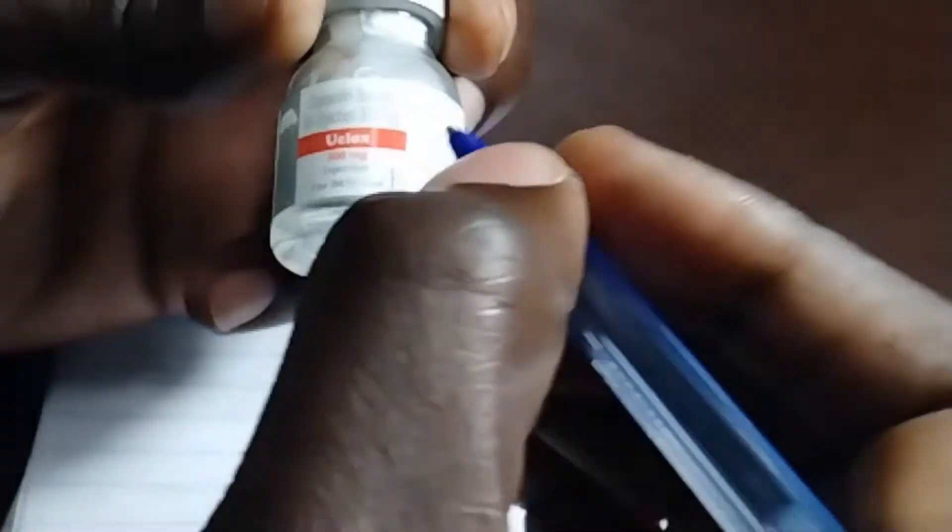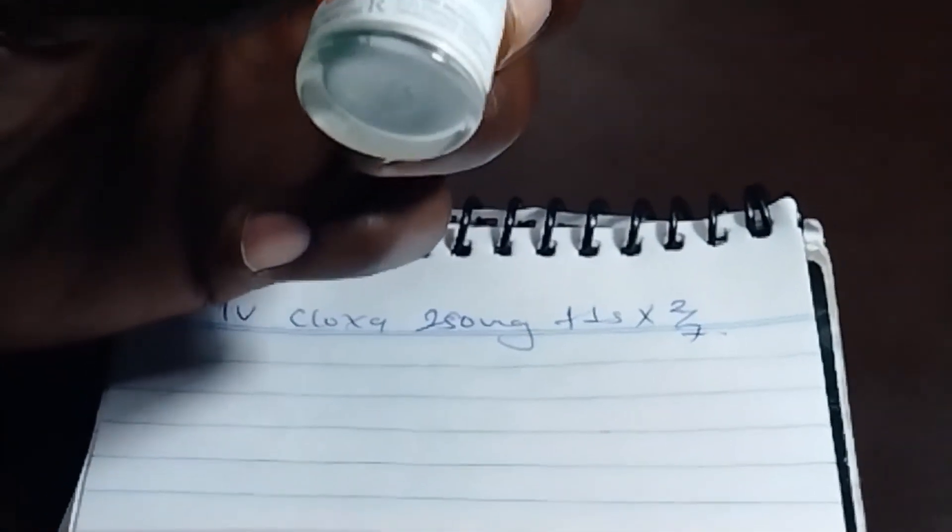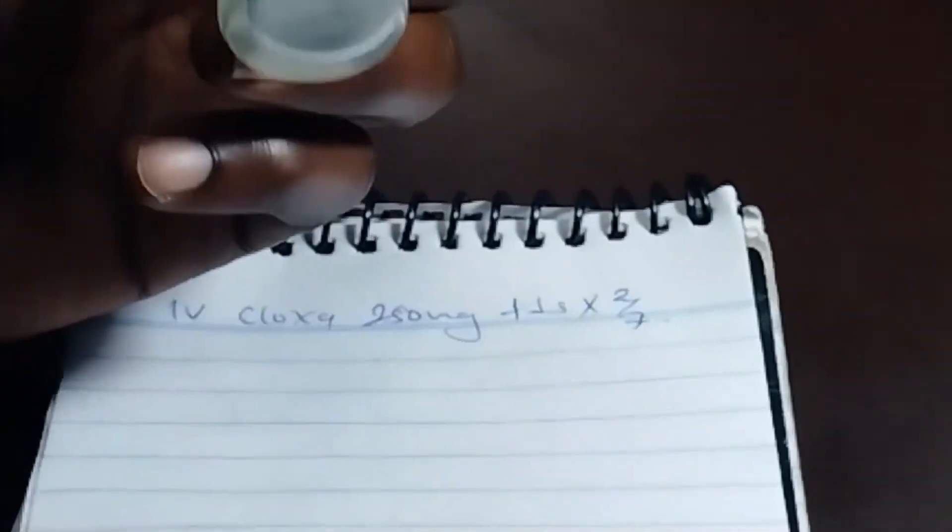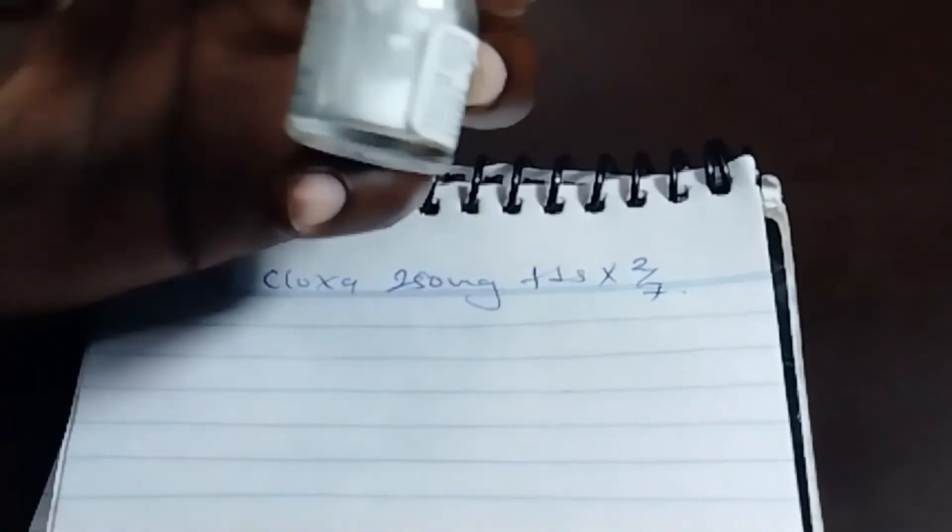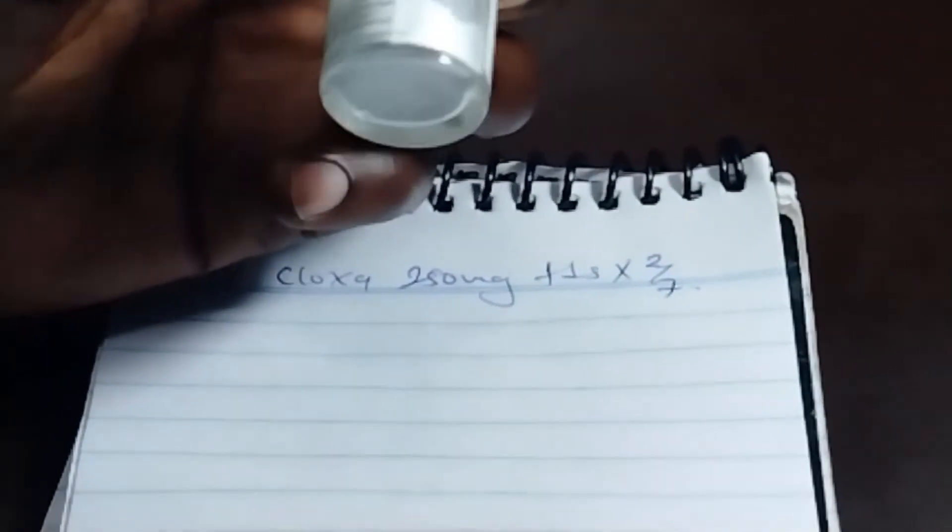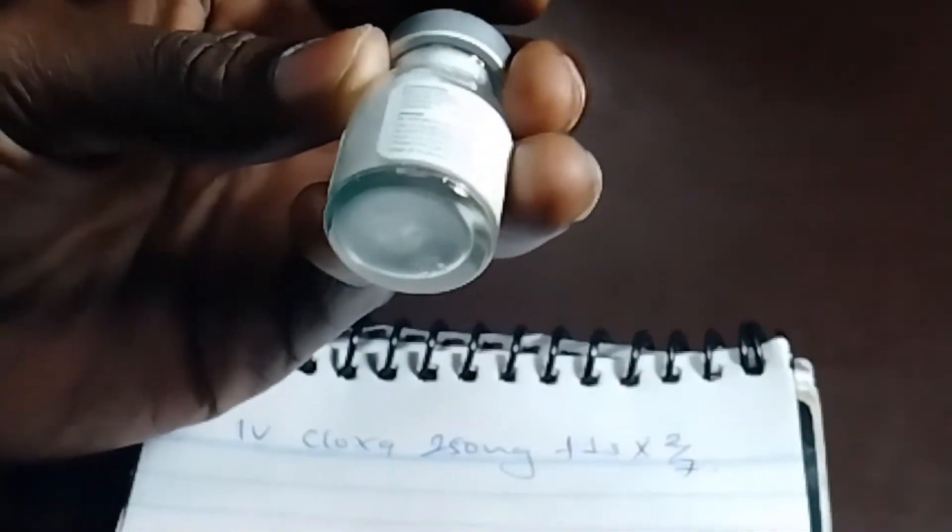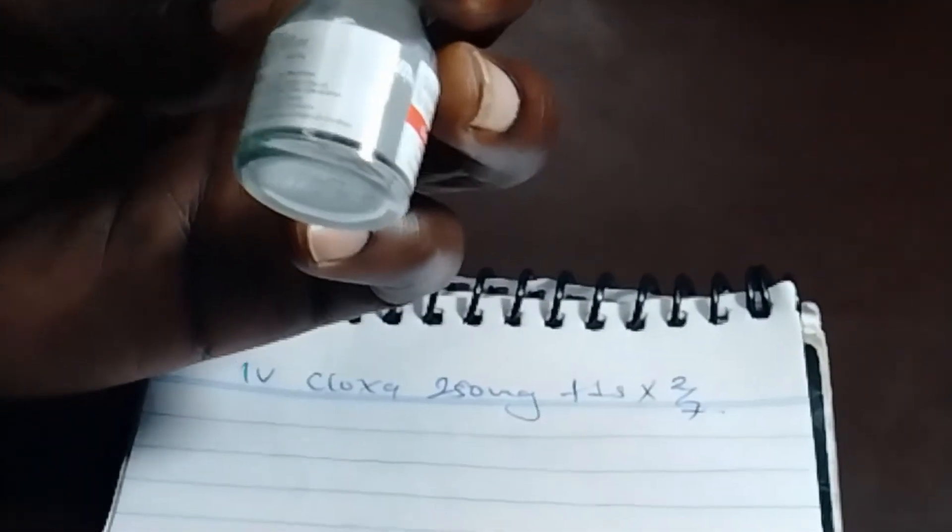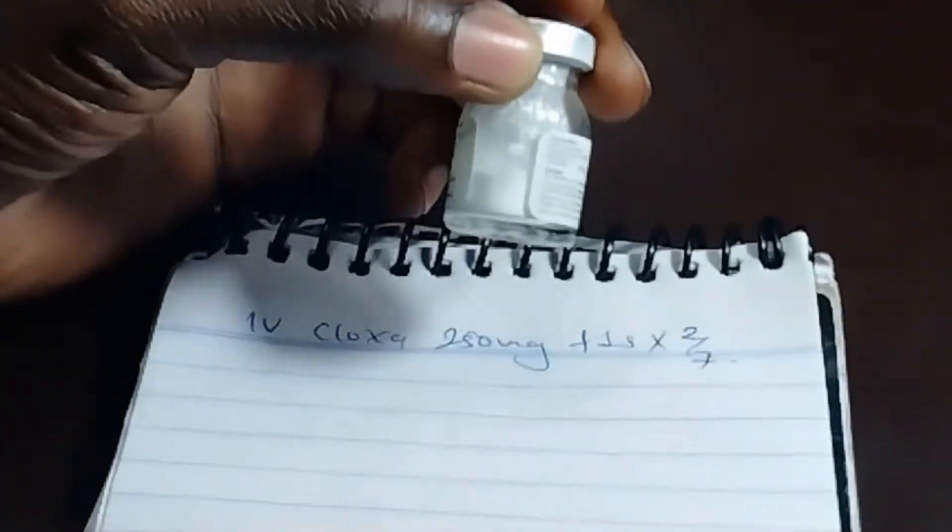So we are going to dilute this drug with 5 mils, but the recommended means to dilute this drug is 10. After diluting, you are going to aspirate the prescribed milligram after converting into mils.